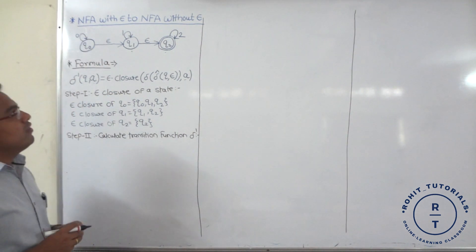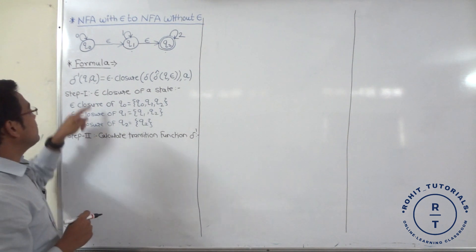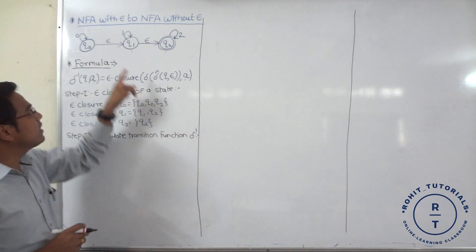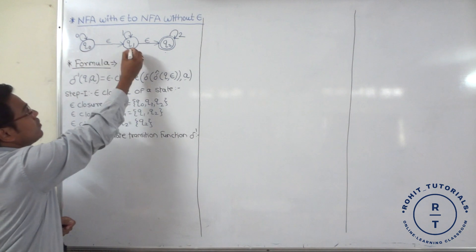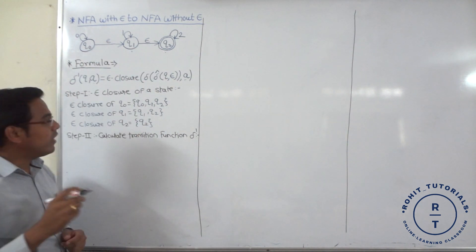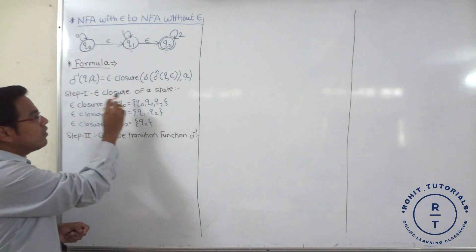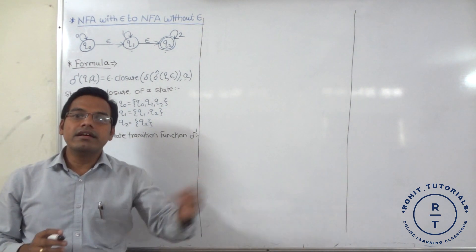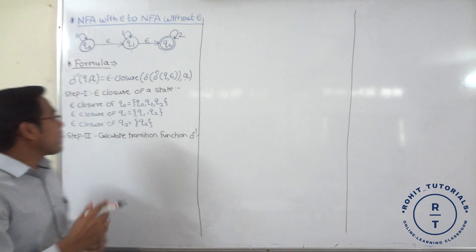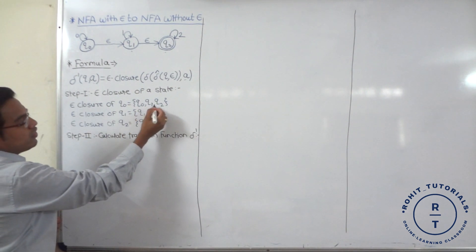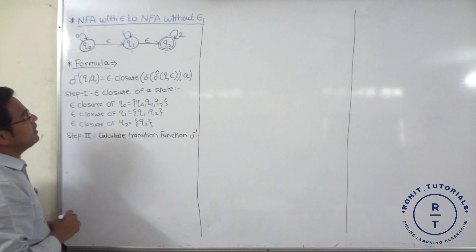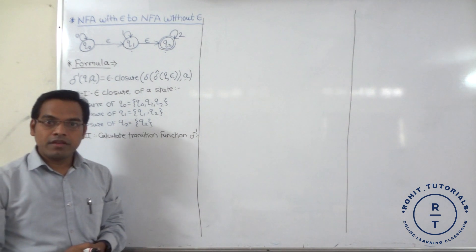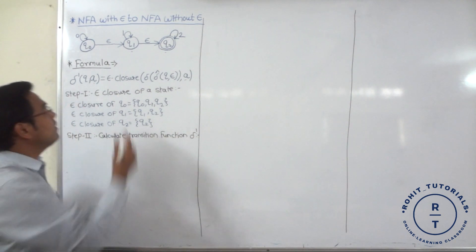For conversion of NFA with epsilon to NFA without epsilon, the first step is to find the epsilon closure of a state. There are three states given in the problem: Q0, Q1 and Q2. The epsilon closure of Q0 is {Q0, Q1, Q2}, because from Q0 we can reach Q0, Q1 as well as Q2 with a null input symbol, that is epsilon.